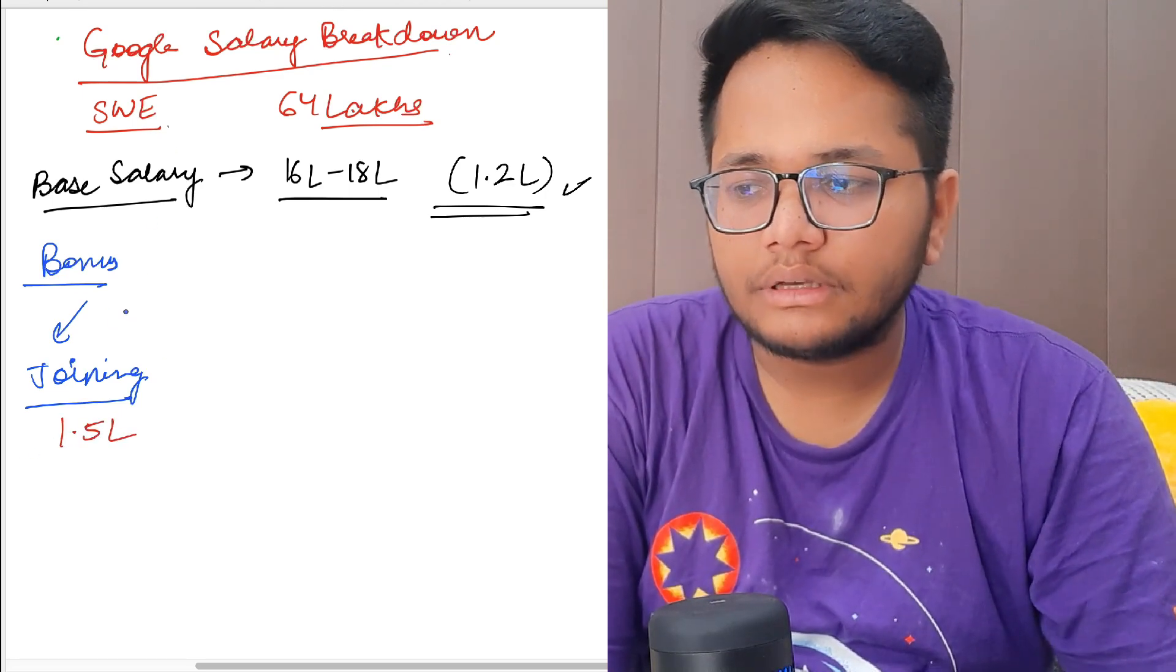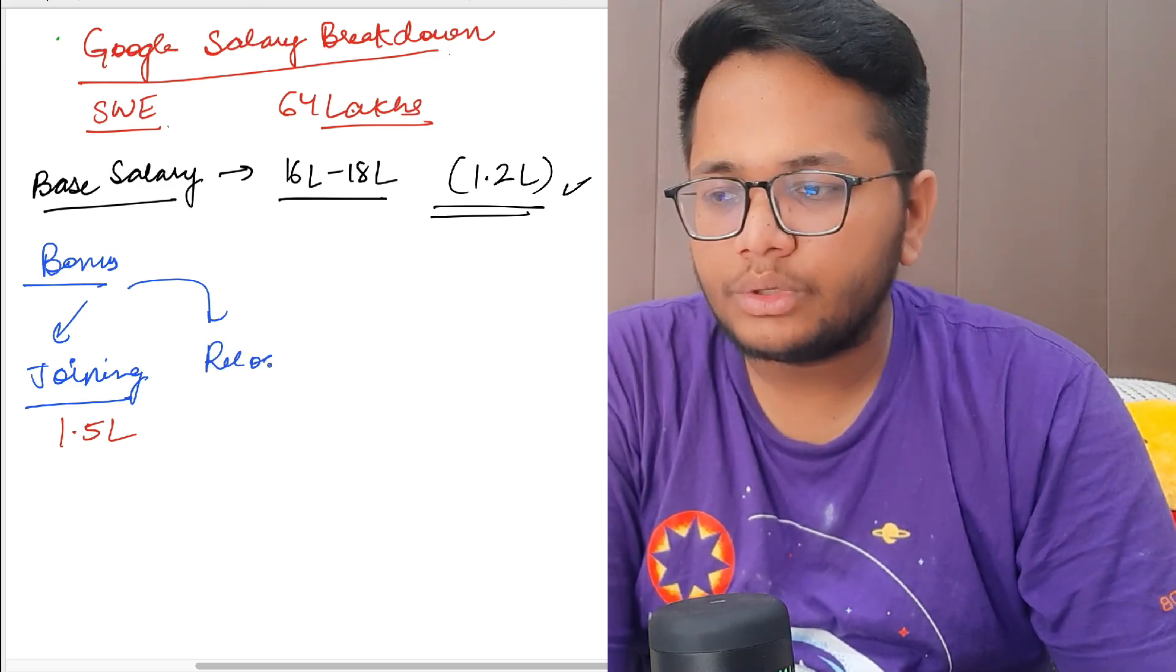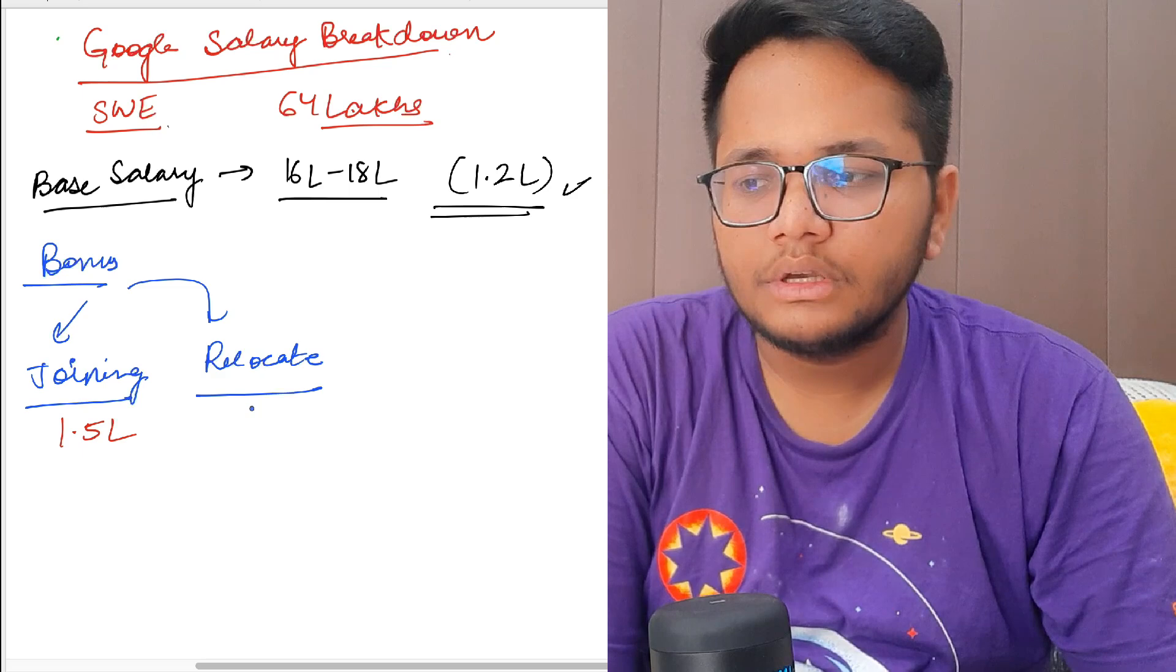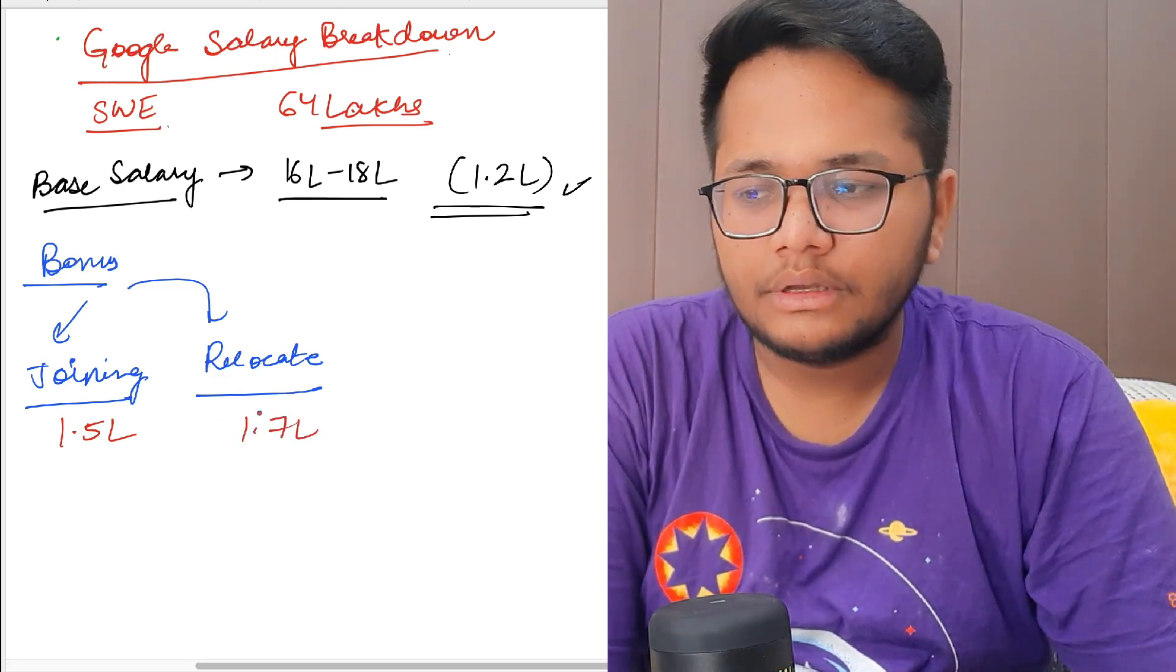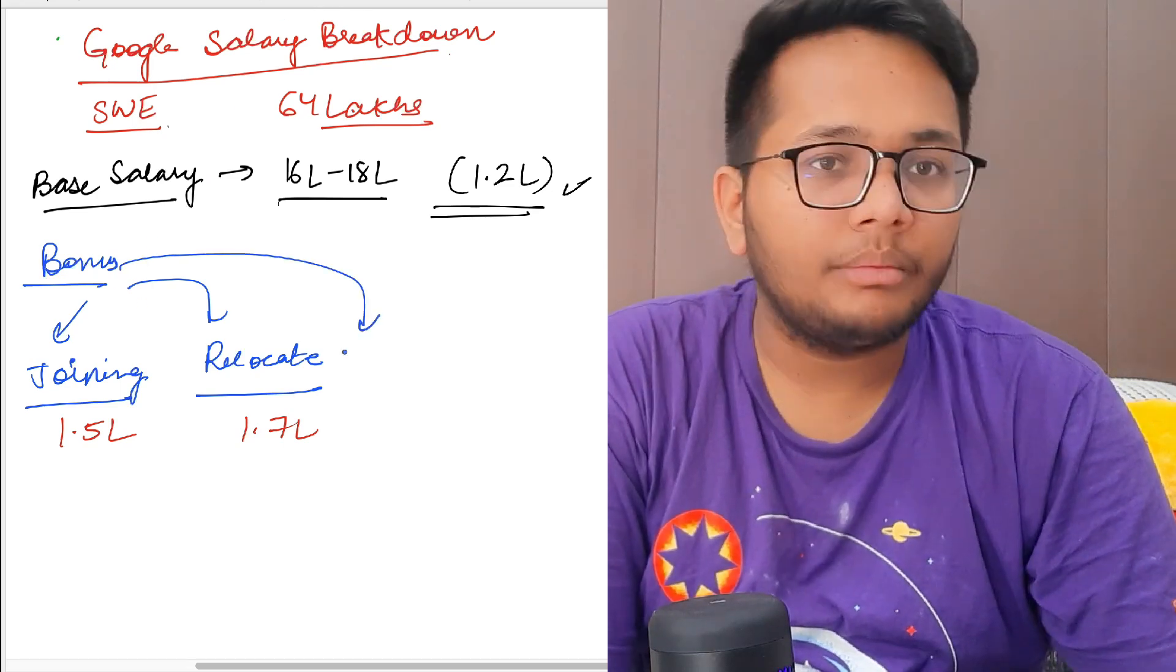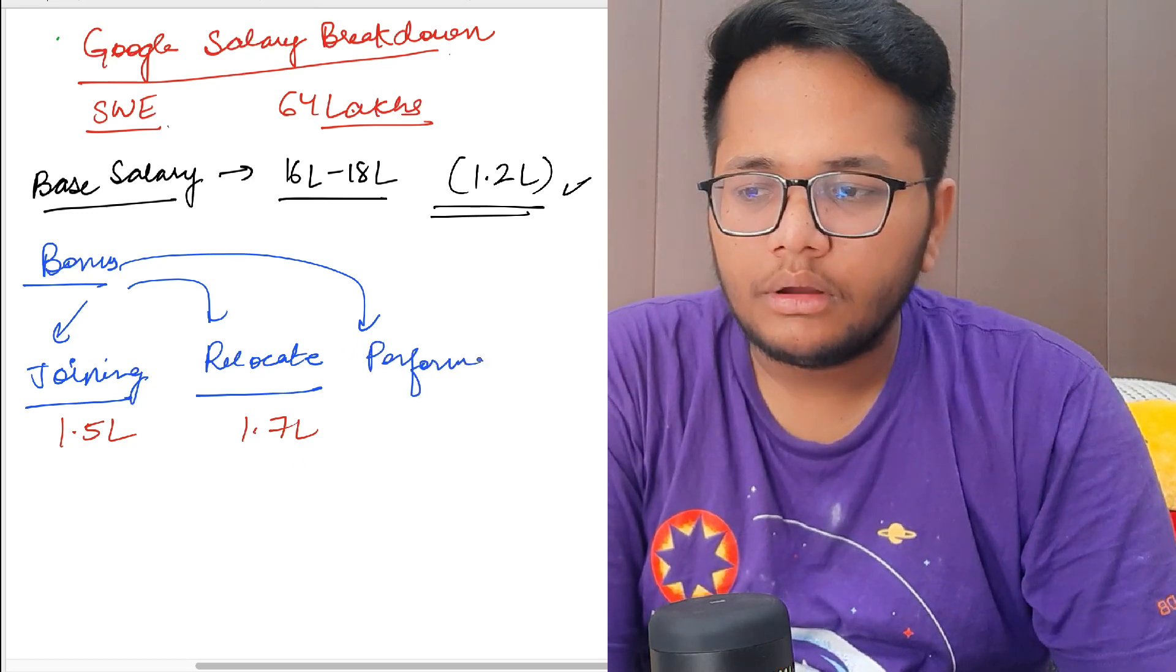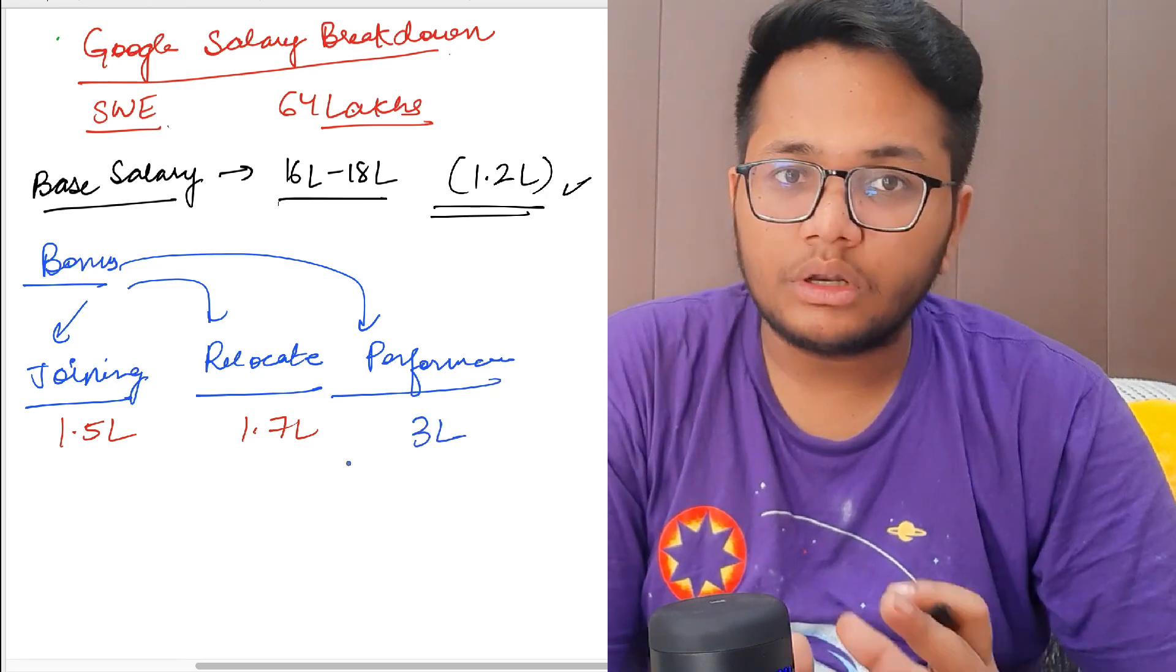After that there is another bonus known as relocation bonus. Once you relocate to another city, let's say Bangalore or Hyderabad or any of their offices, you get this amount that is worth 1.7 lakhs. Along with that they have their performance bonus. After your performance of one year you will get this particular bonus amount. This ranges from person to person, but the average is around 3 lakhs. This is the total amount of bonus you would be getting if you join Google as a software engineer.